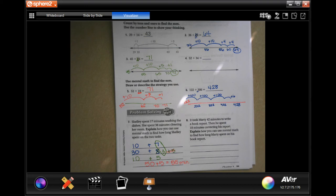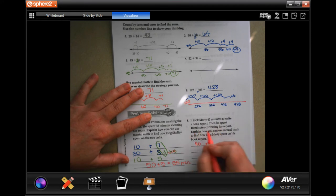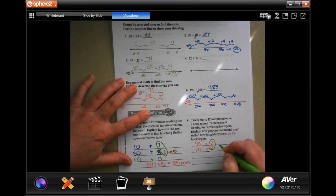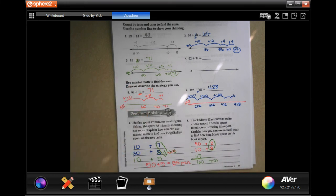Marty took 42 minutes to write a book report and then he spent 18 minutes correcting his report. Explain how you can use mental math. So 42 minutes is 40 plus 2, and 18 is 10 plus 8. This actually leaves us in a really good spot because that is another 10. So I'm just going to put that 10 down here. And 40 plus 10 plus 10, 60 minutes.